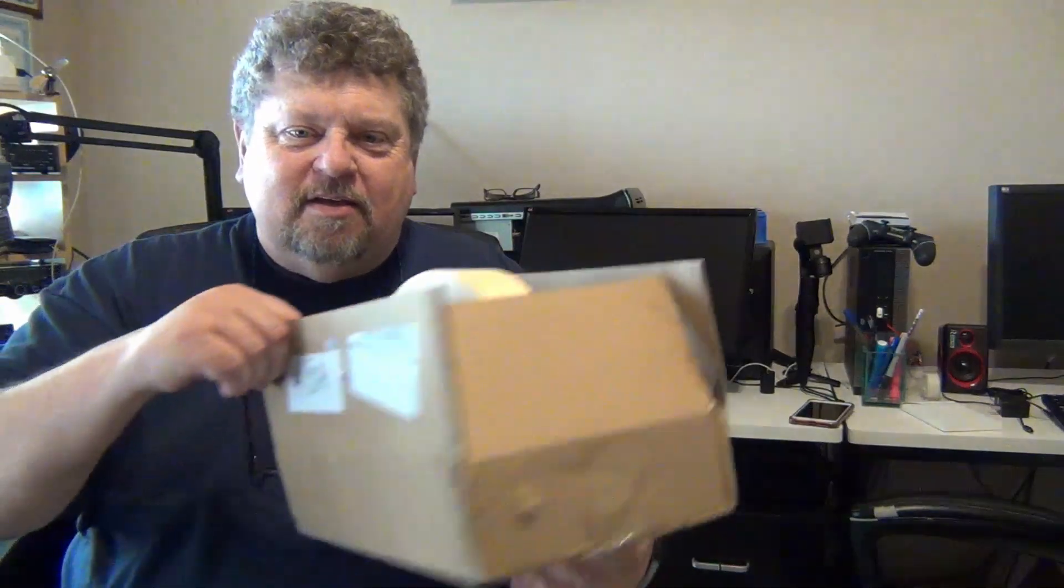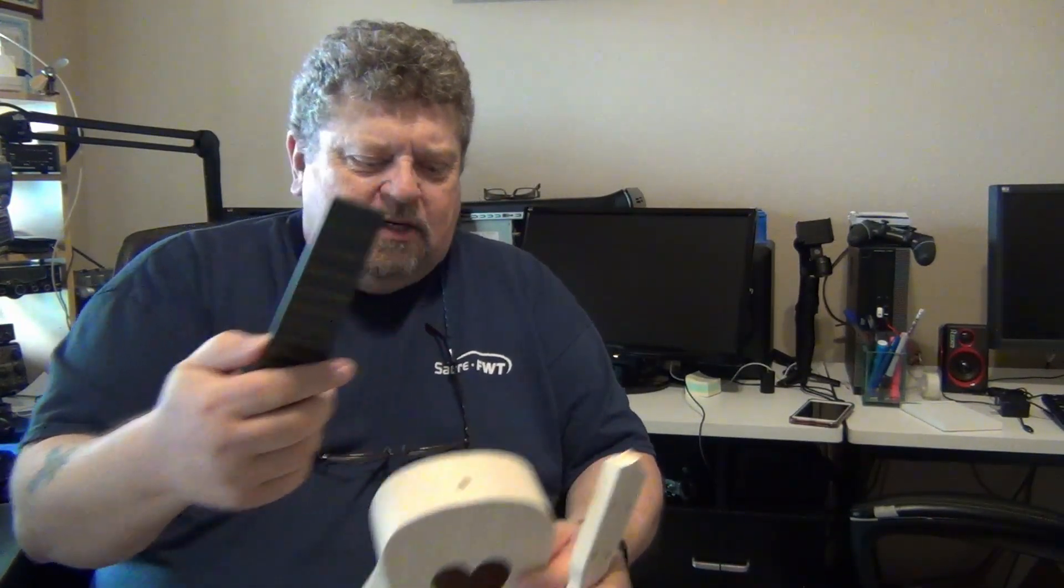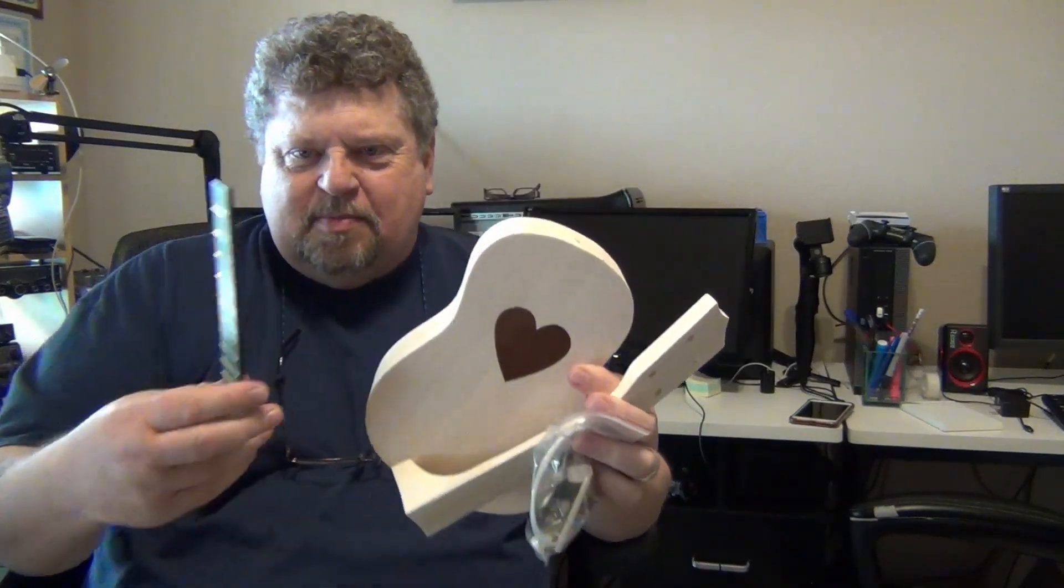However, my beautiful wife did buy me this for Father's Day. It is a ukulele and it comes with everything you need. It's got the body and the neck, all the other components you need - strings, the bridge, screws, the tuning pegs, the nuts, all that sort of stuff, and a fingerboard or fretboard.